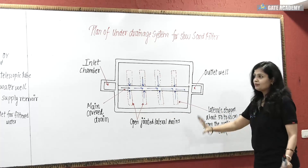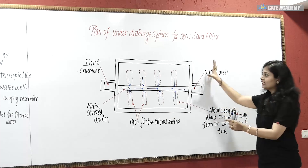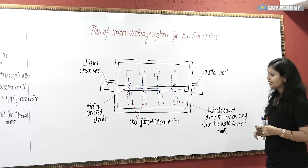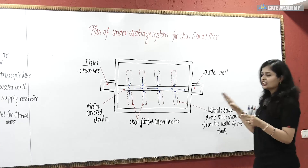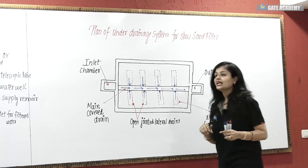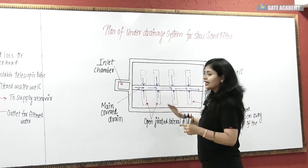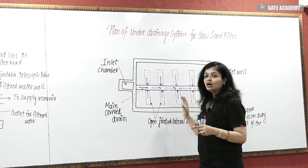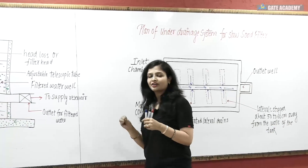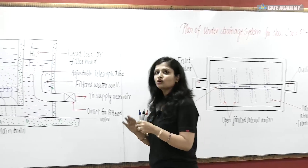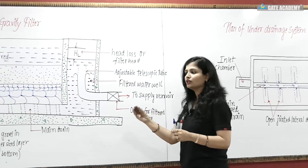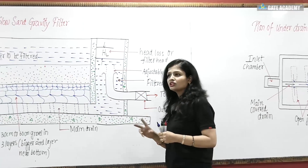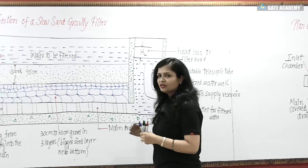This is your plan of the under drainage system. You can understand the lateral drains and the main central drain and how they function. The lateral drains are provided at a slope to the main central drain. The spacing between lateral drains is 3 to 5 meters.